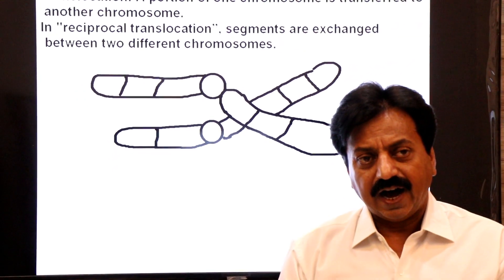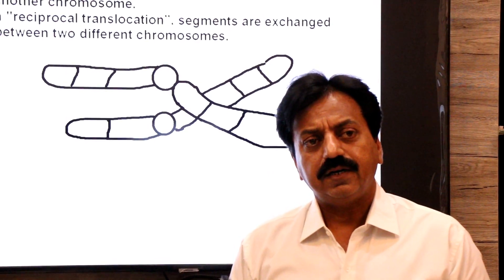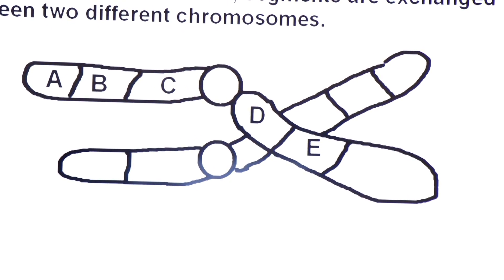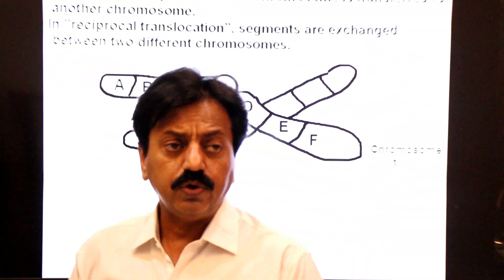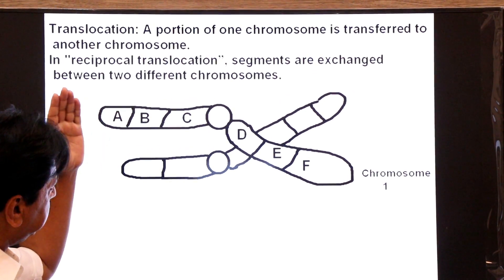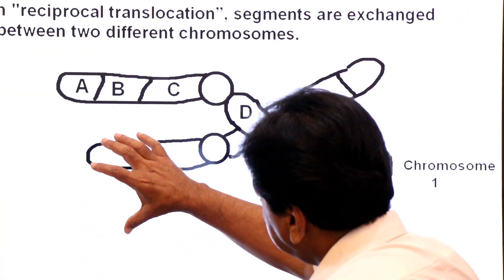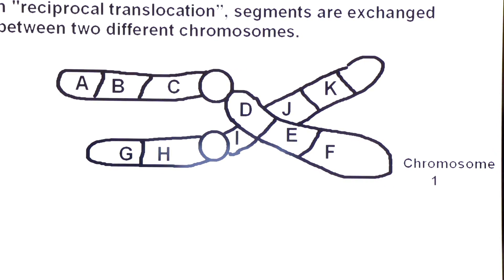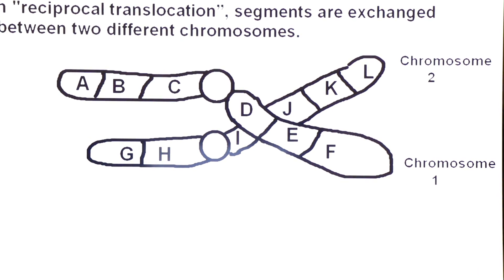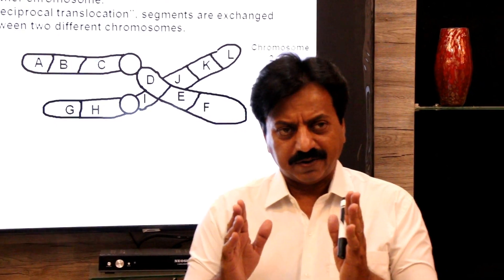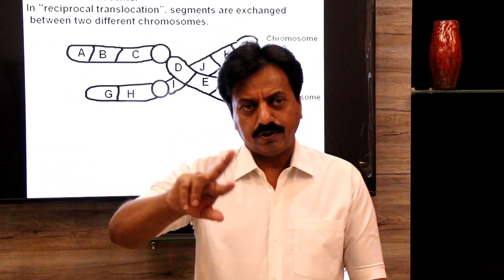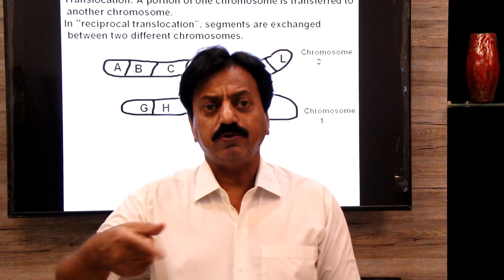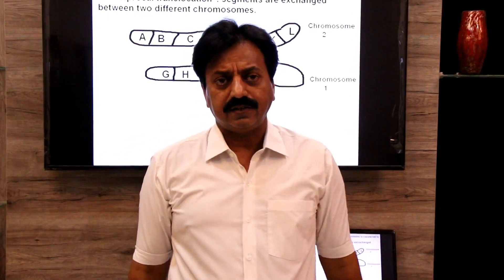Look at the diagram: chromosome one has segments A, B, C, D, E, and F. Chromosome two has segments G, H, I, J, K, and L. In translocation, a segment from one chromosome transfers to another and vice versa — this is called reciprocal translocation.